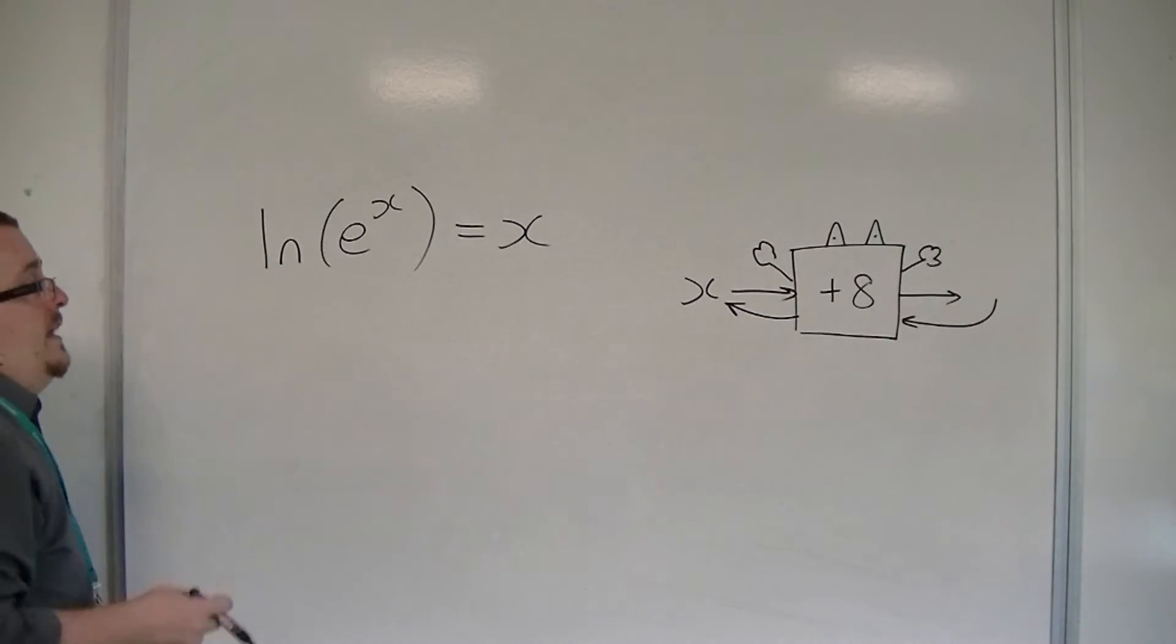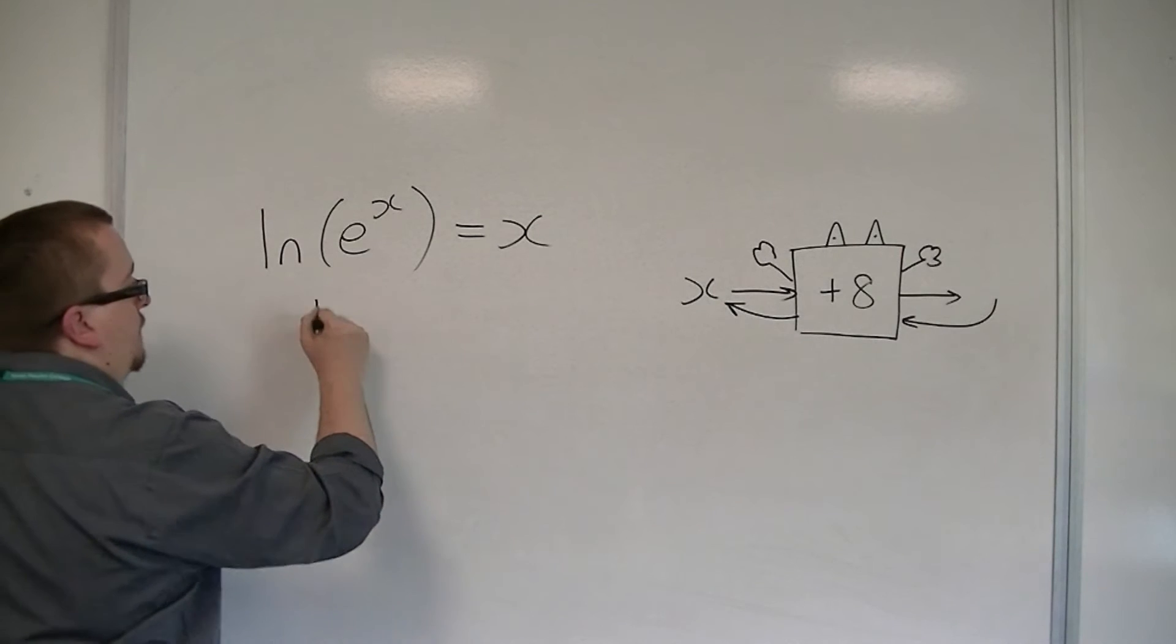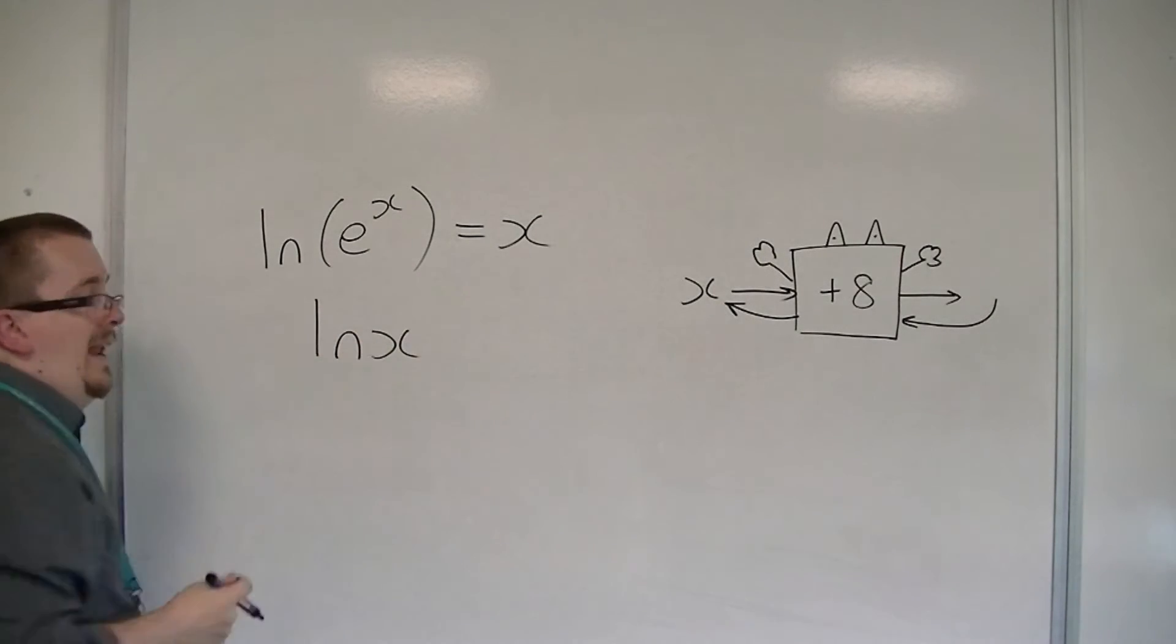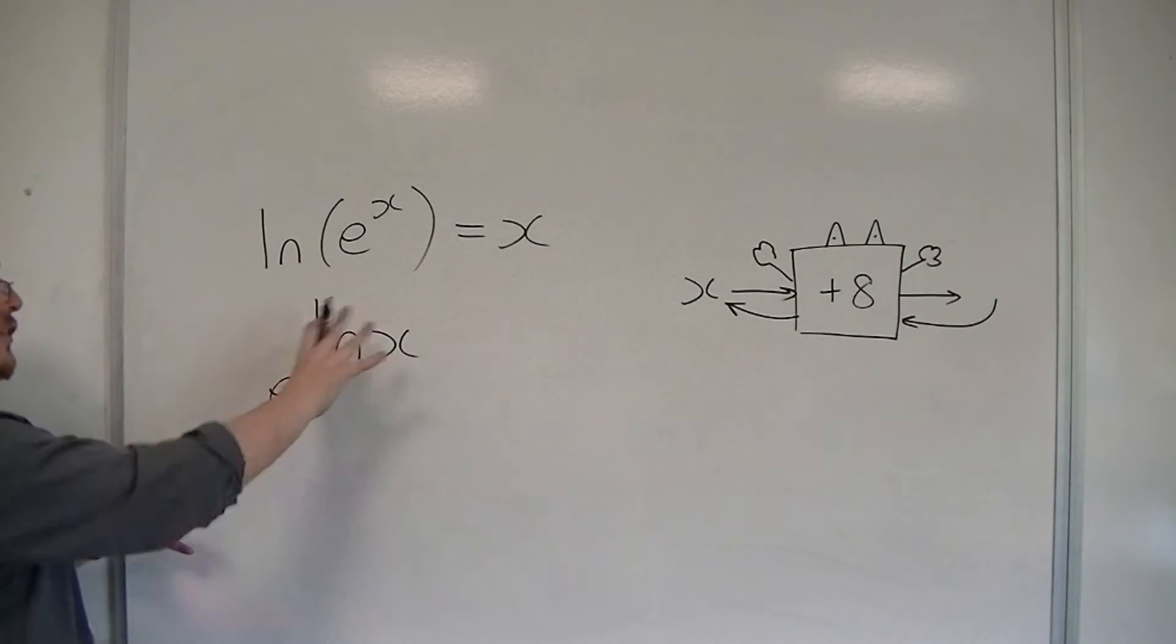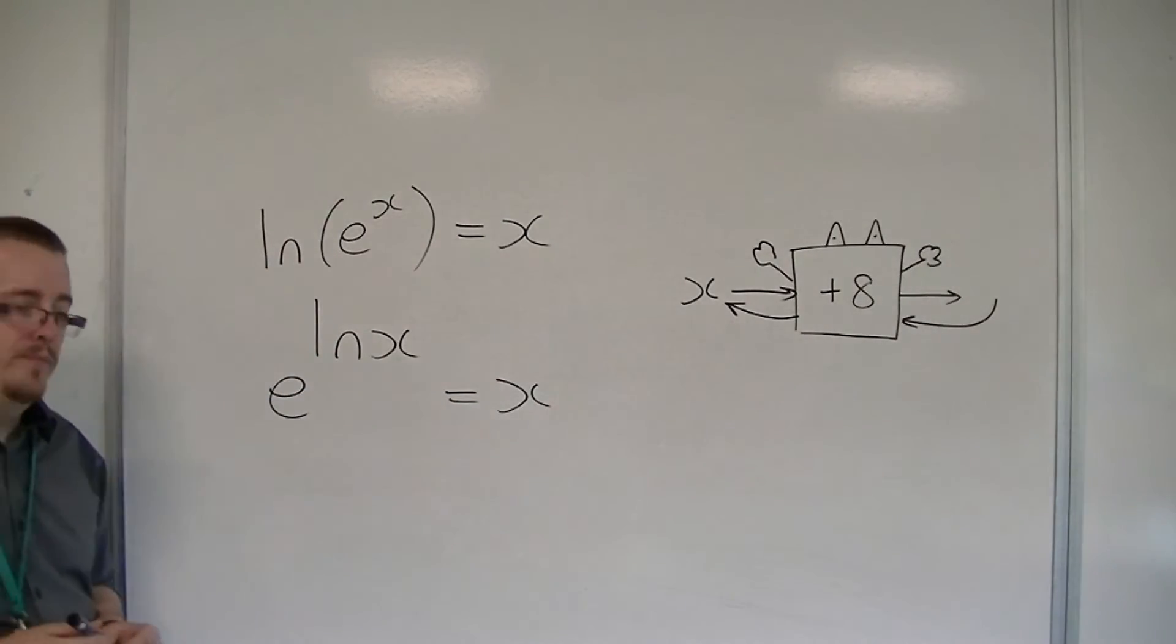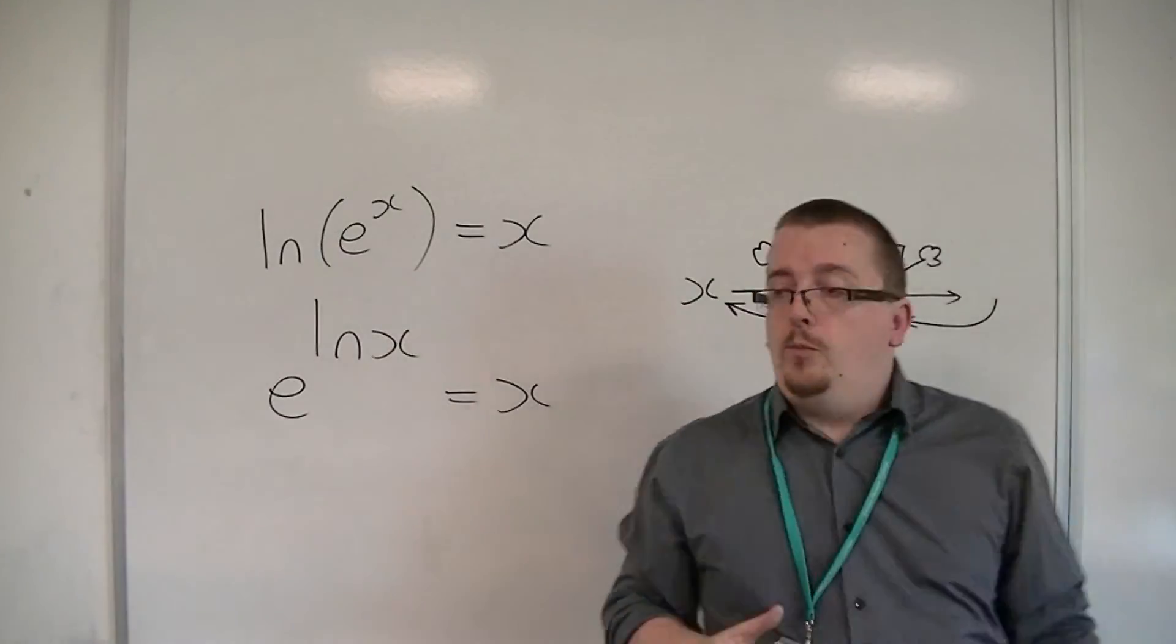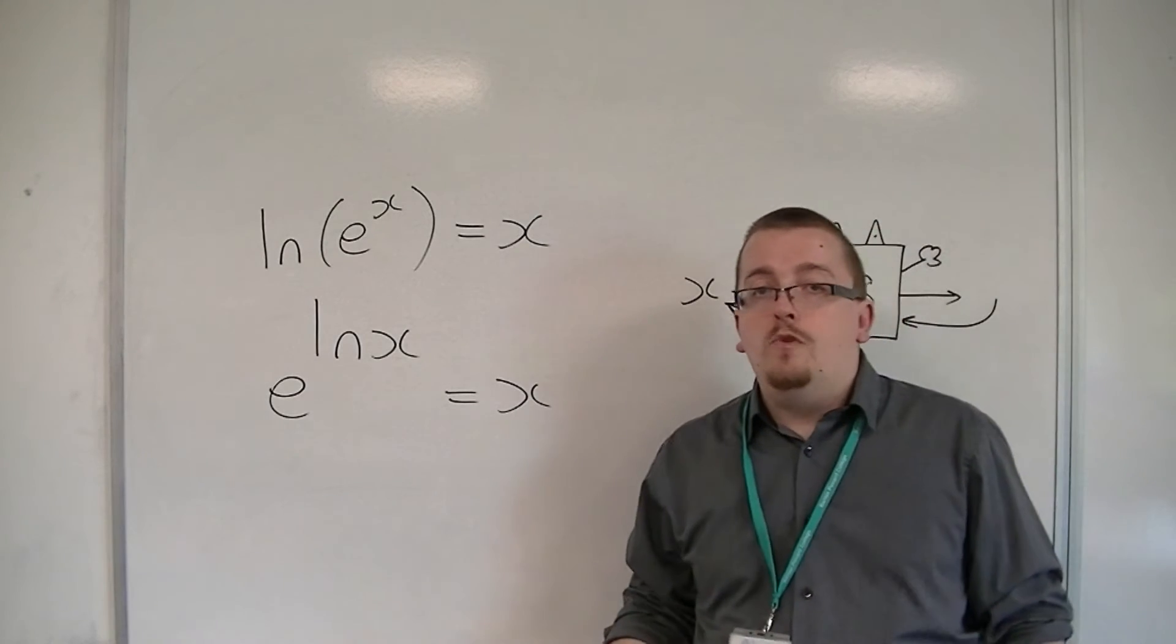And you can do it around the other way. You could perform log x first, going from left to right, and then perform e to the x. So you'd have e to the log x, and that would be the same as just performing x. So in this way, you can see that the e and the log cancel each other out.